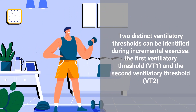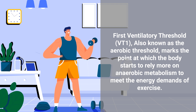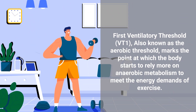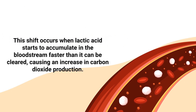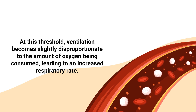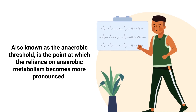There are two distinct ventilatory thresholds that can be identified during incremental exercise: VT1 and VT2. The first ventilatory threshold, or VT1, is also known as the aerobic threshold, and it marks the point at which the body starts to rely more on anaerobic metabolism to meet the energy demands of exercise. This shift occurs when lactic acid starts to accumulate in the bloodstream faster than it can be cleared, causing an increase in carbon dioxide production. At this threshold, ventilation becomes slightly disproportionate to the amount of oxygen being consumed, leading to an increased respiratory rate.